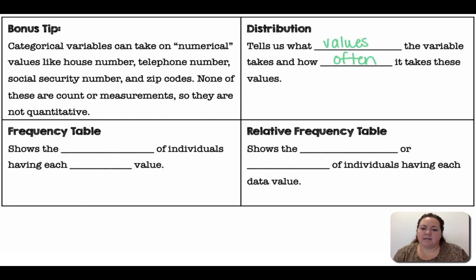Distribution tells us what values the variable takes and how often it takes those values. So your distribution, a lot of times you'll be putting together a type of graph of your distribution. A frequency table shows the number of individuals having each data value. So it's like the count, how many times did this occur? Relative frequency table shows the proportion or percent of individuals having each data value. So relative frequency is when we change that over to percentages.